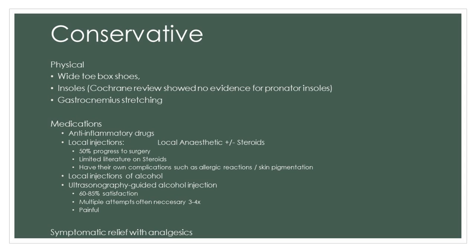There are other types of injections too, for example alcohol to in effect poison the aberrant nerves which are generating the pains. A relatively more recent innovation is ultrasonography-guided alcohol injection, which is a very useful technique to make sure that the alcohol is injected in precisely the correct place, and this can help reduce any potential complications. Usually in the literature it's reported as having 60–85% satisfaction. However, it's important to state that multiple attempts are still often necessary — three or four injections may be required, and it is actually painful. One has to bear this in mind when making this decision, although one also has to bear in mind what the alternative is, which is of course surgery. With all of this, it's important to take into account symptomatic relief, including analgesics and massages.